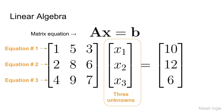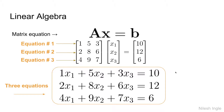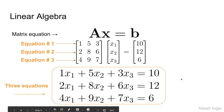For the linear algebra, here is the equation Ax = b. In the example shown, A represents a three-by-three matrix with values one, five, two, eight, six, four, nine, seven; x are the three unknowns; and b are the values on the right-hand side. Each row of the matrix represents one equation, giving us three equations such as x1 + 5x2 + 3x3 = 10, and so on.